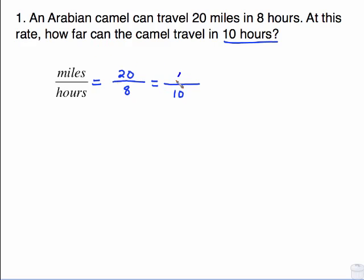How far, that's talking about the distance, and that's my x. You should remember that if you want to solve a proportion, which is just one fraction equal to one fraction, all you have to do is cross multiply. So if I cross multiply here, 8 times x is 8x. Cross multiply here, 20 times 10 is 200.